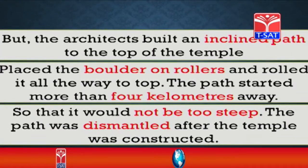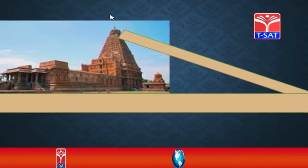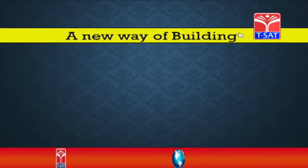The path started more than 4 kilometers away so that it would not be too steep. The path was dismantled after the temple was constructed. In the 11th and 12th centuries there were no cranes or technology to lift the shikhara to the top of the temple. They placed an inclined path from ground level to the top, and as you can see in the image, they made rollers and rolled the shikhara onto the top.